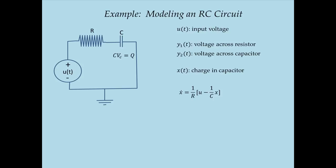Now we want the output equations. We want the voltage across the resistor and the voltage across the capacitor. The voltage across the resistor is input voltage U minus capacitor voltage, which is (1/C) times X. The voltage across the capacitor is (1/C) times X. We have now built a complete state-space model of this RC circuit containing a governing equation for the rate of change of the state variable — capacitor charge — and two output equations. We will come back and simulate this state-space model in Modelica.